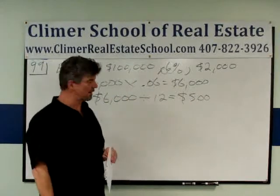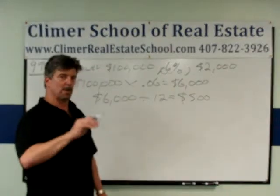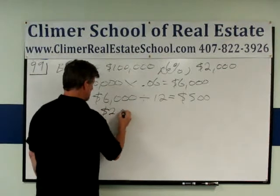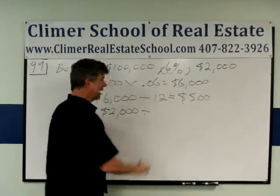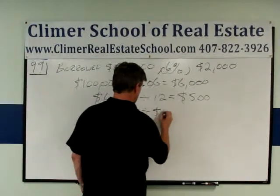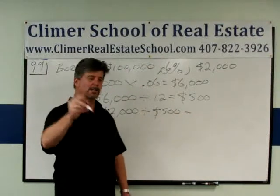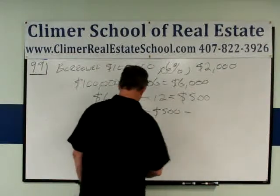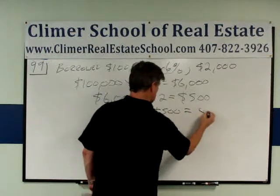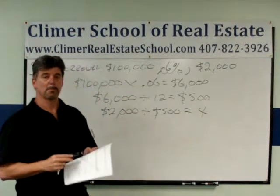$500 per month. I take that $2,000, which is the amount I paid, and I divide by my $500 a month. If you put that in your calculator, you're going to get 4, and the answer is 4 months.